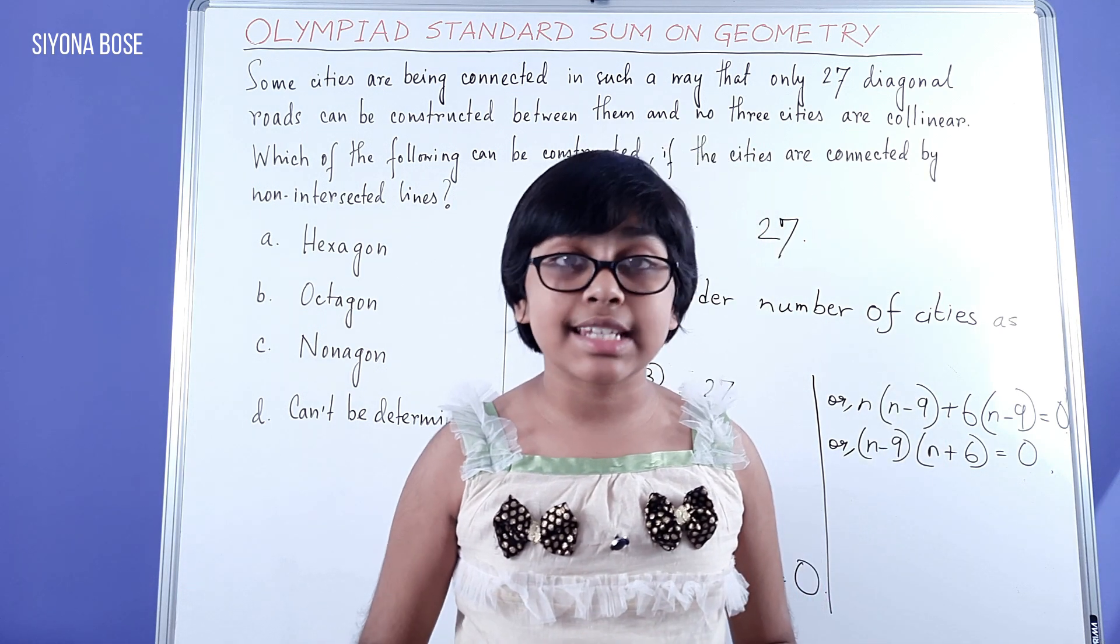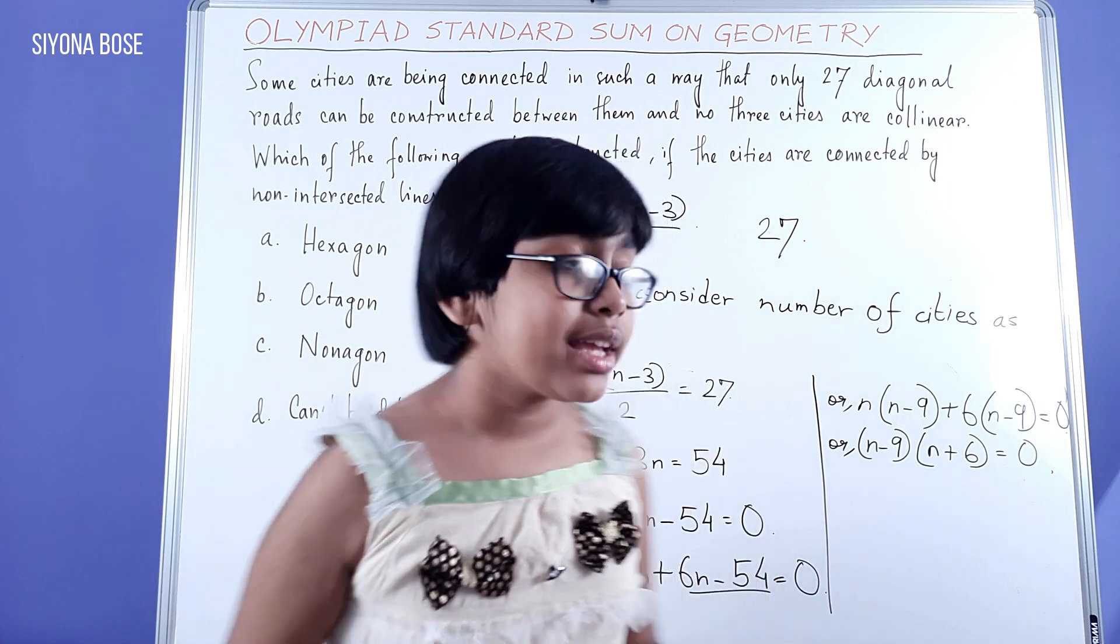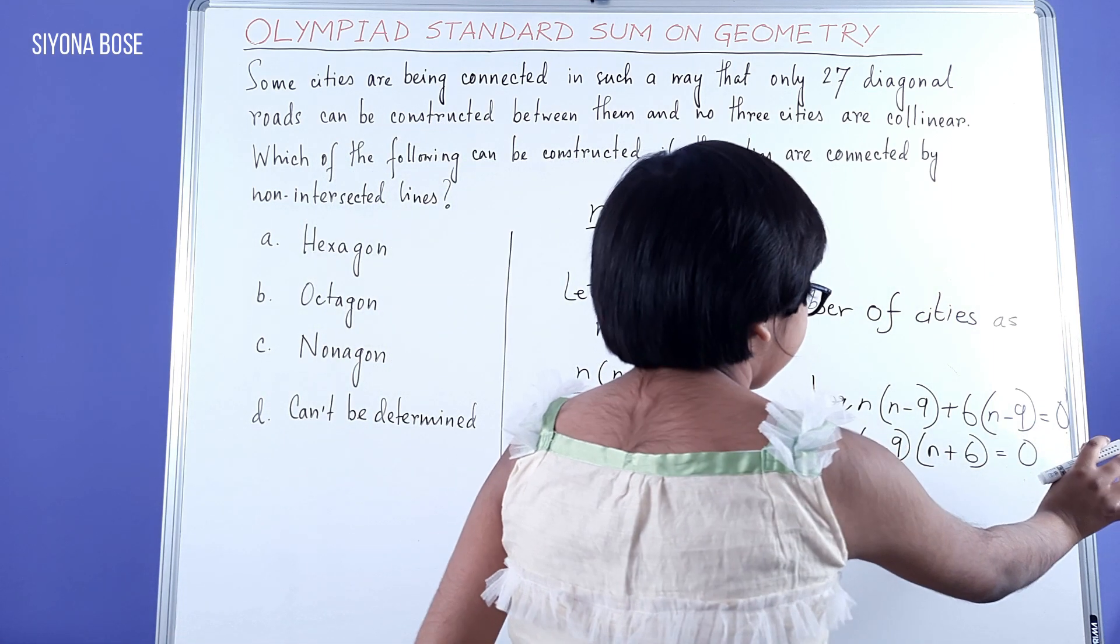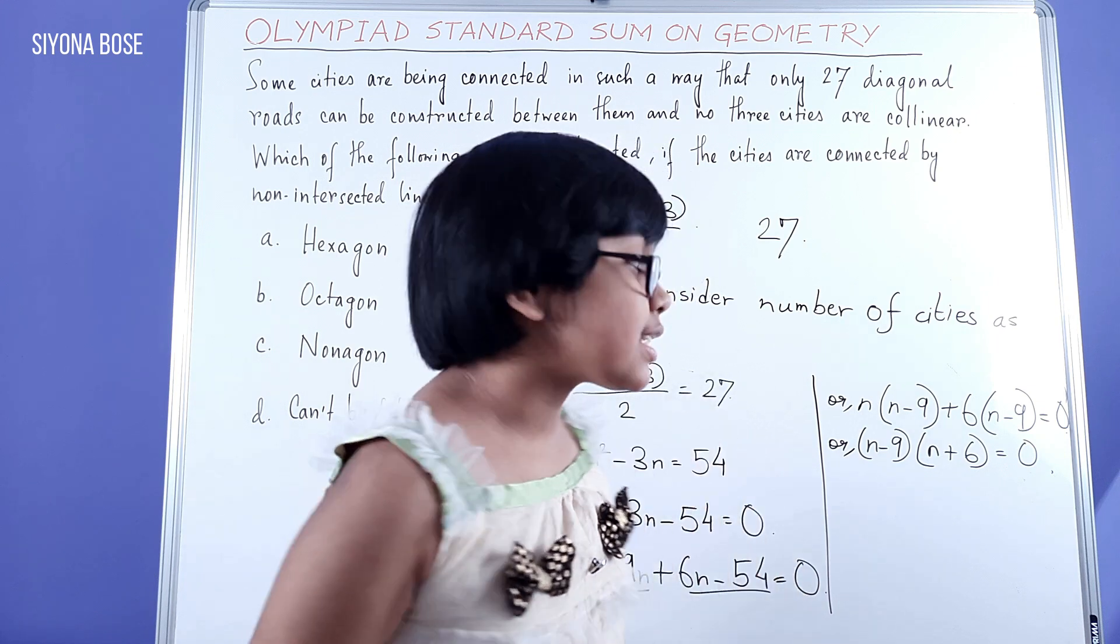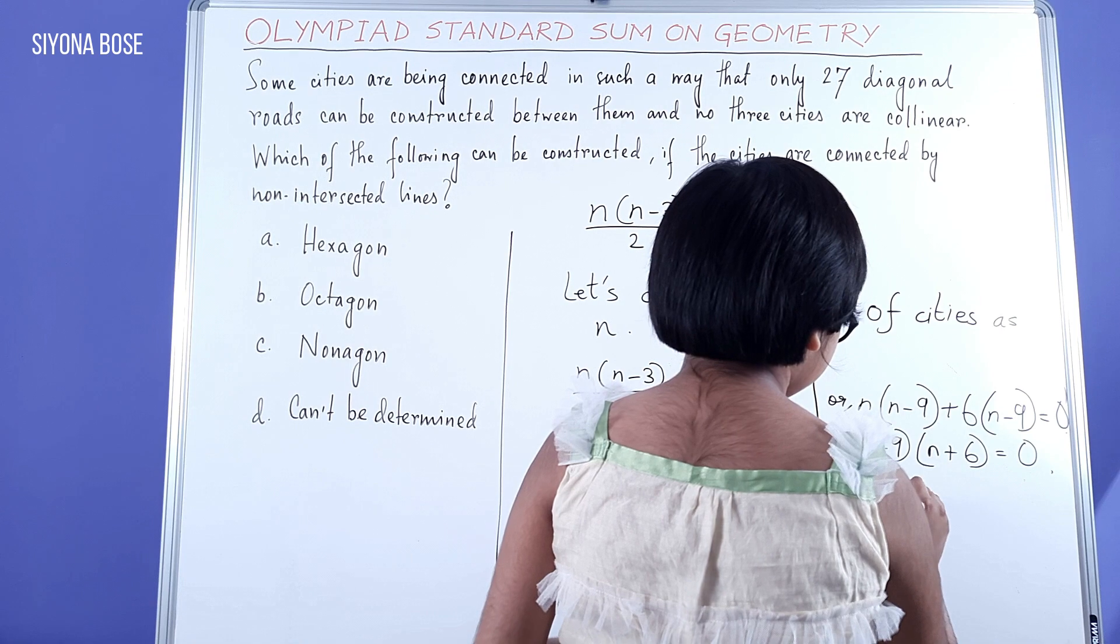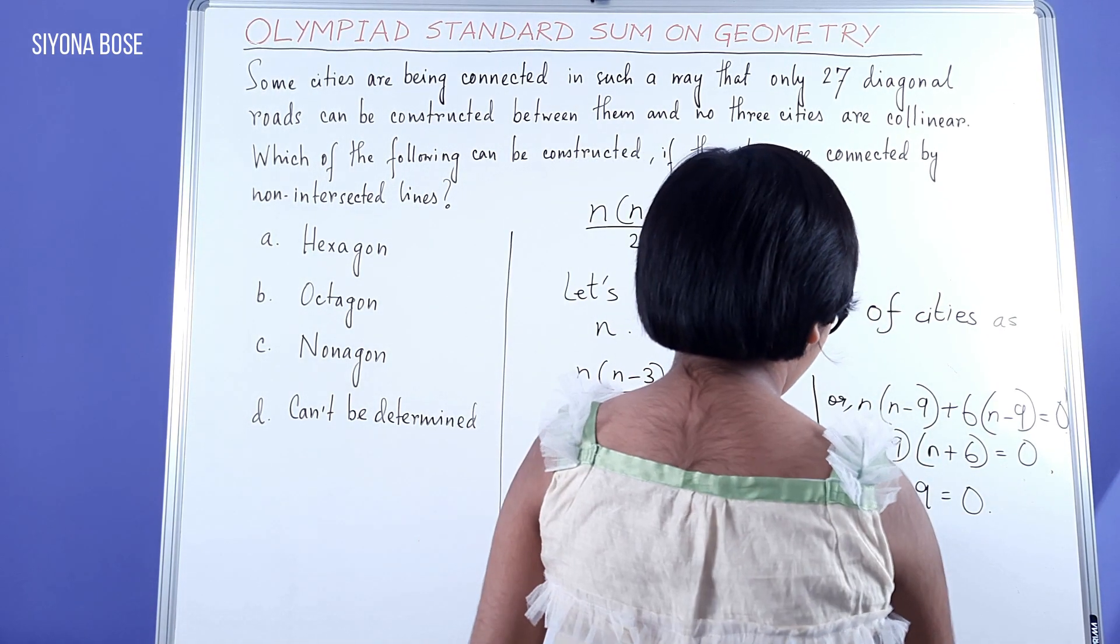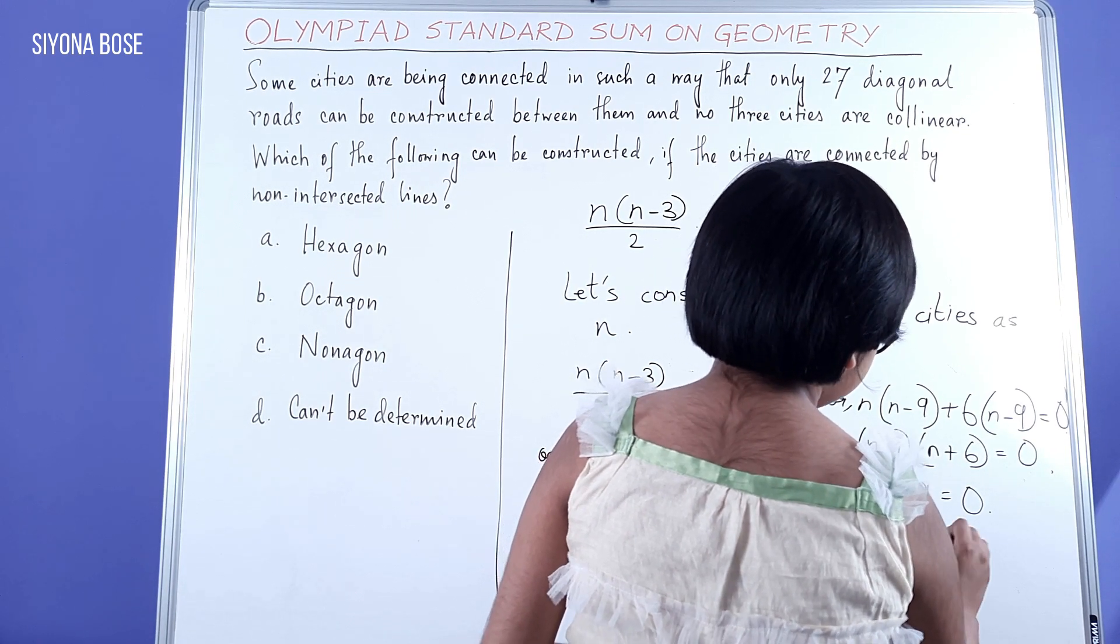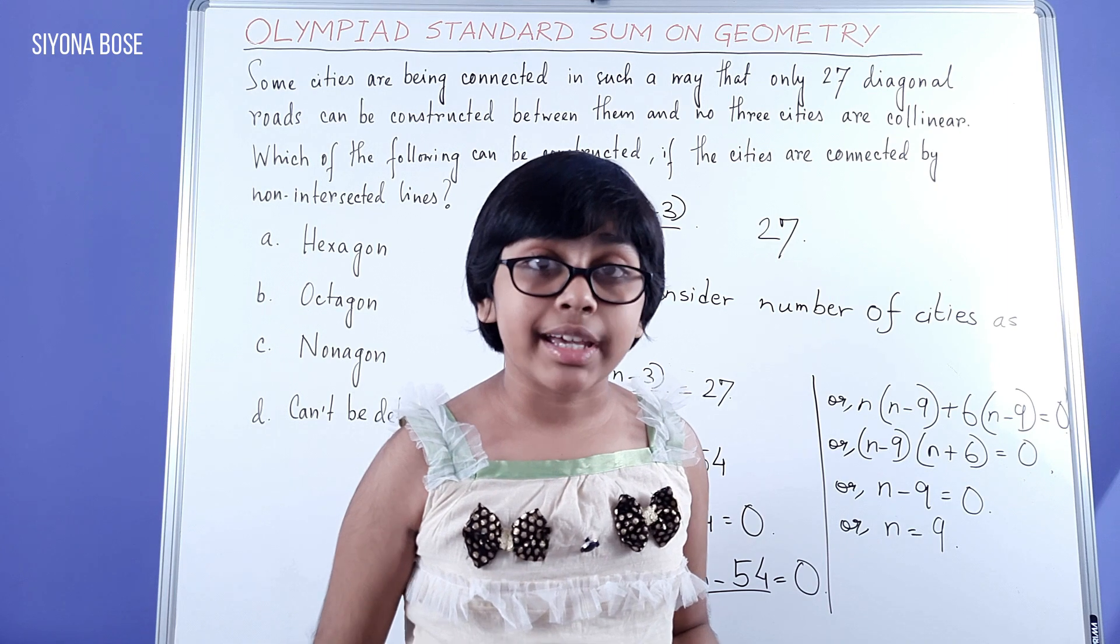That means in any case, if n is not 0, then n plus 6 also can't be 0. That means n plus 6 is not 0, and we are left with only one alternative, n minus 9 equal to 0. Now we can get n, or n equals 9. That means number of cities is 9.